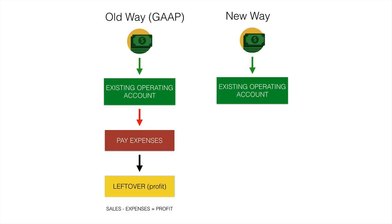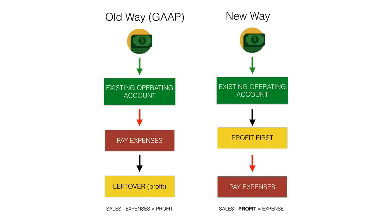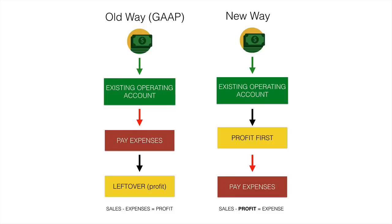The other part of this is that it's going to open your eyes to show you how healthy your business really is. Here's what it looks like: we still have money coming into your existing operating account. But what happens now is you actually pay yourself first — you give the profits to your company first. Then you pay expenses. That switches everything around, because the formula is now: sales minus profit equals expenses.